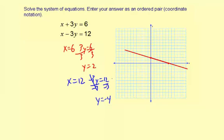Now let's plot those intercepts. x equals 12, y equals negative 4. We'll draw that line. About right there. So we do have an intersection point.